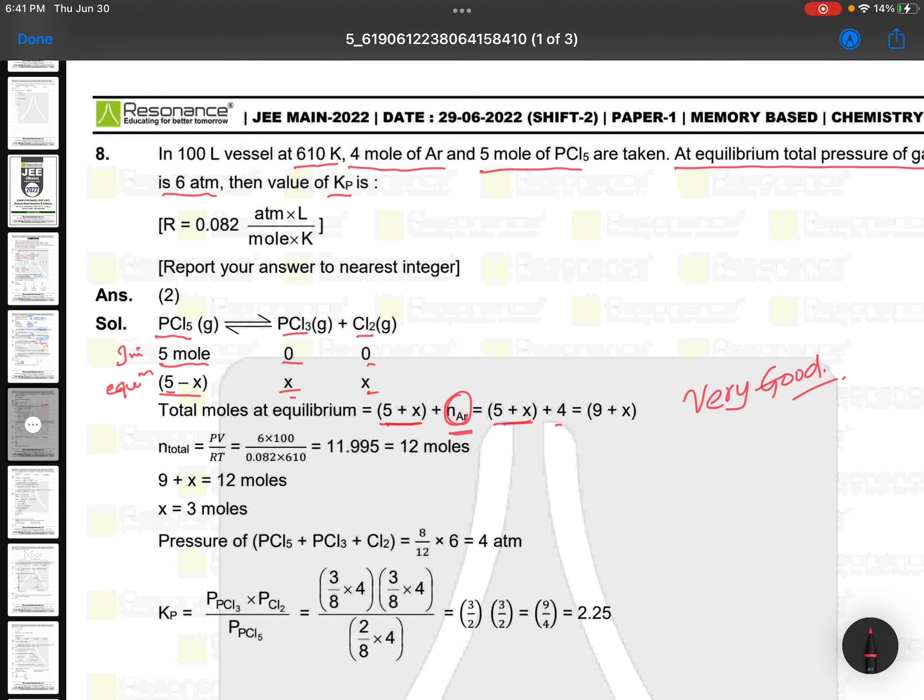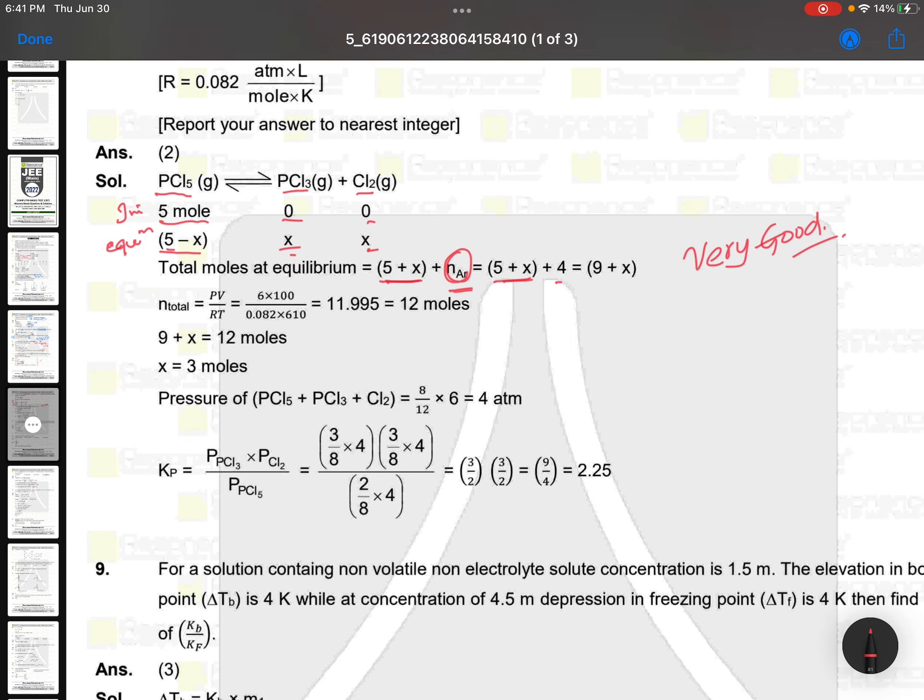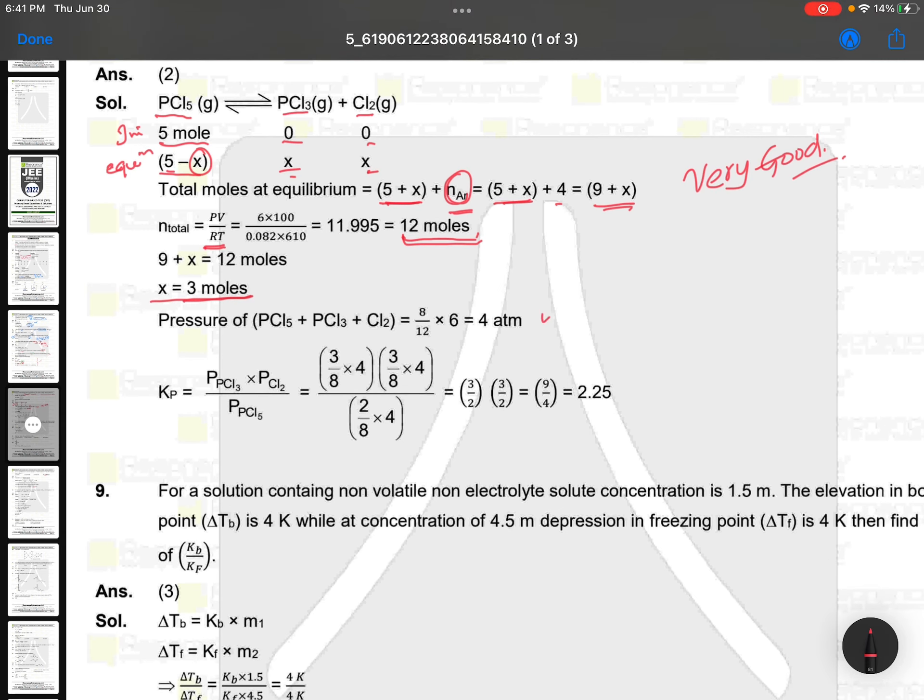Plus number of moles of argon - argon is inert. 5+x+4, so that is nothing but 9+x. And now PV = nRT. Based on that we are calculating total number of moles as 12 moles. So x = 3 moles. Once you get that, you can calculate the partial pressures because total pressure is 6 atm. It's a very good question of the complete series also, you can say. One wonderful question.